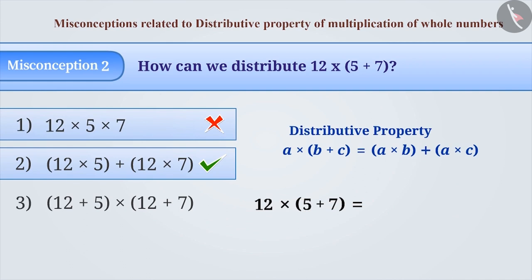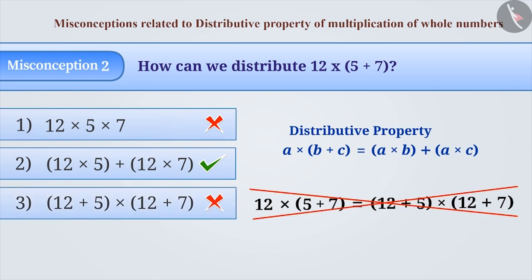Similarly, while distributing multiplication over addition, the plus sign is written between the numbers inside the bracket, and the multiplication sign is written outside the brackets. This is also incorrect.